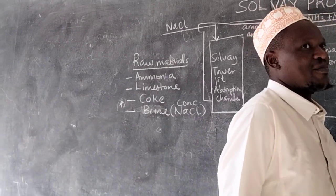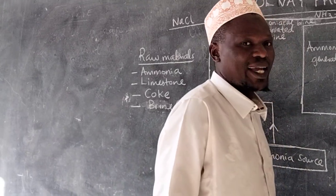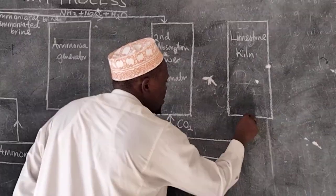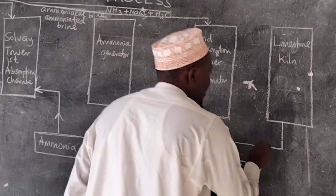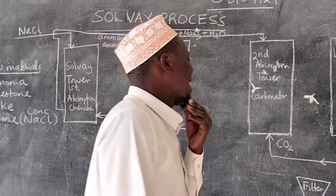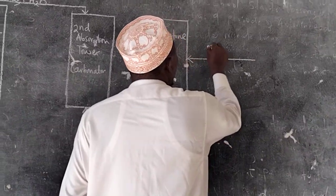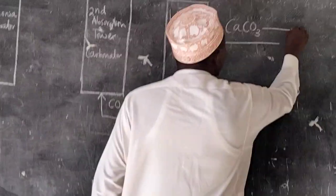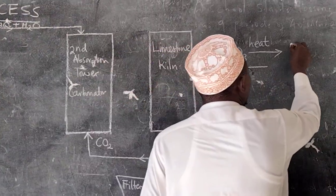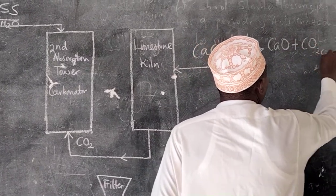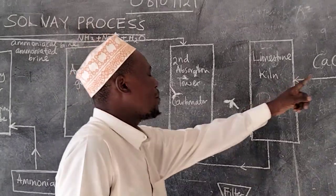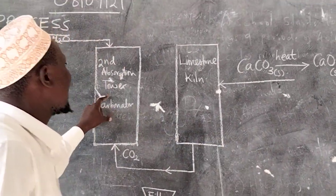At the second absorption tower, the ammoniacal brine is reacted with carbon dioxide (CO₂). This CO₂ comes from the limestone kiln. At the limestone kiln, limestone — which is calcium carbonate — is heated to give calcium oxide plus carbon dioxide gas.